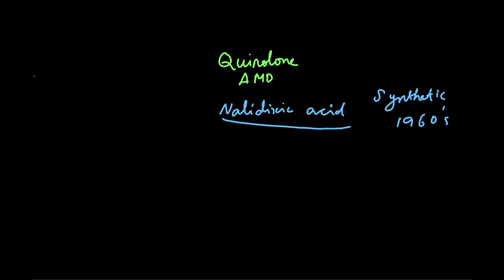We shall see the structure of Nalidixic Acid. The Nalidixic Acid structure is composed of the Quinolone ring system. This is the Quinolone ring system. On the Nitrogen, there is an Ethyl substitution. And in the third position, there is a Carboxylic Acid.